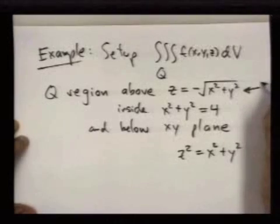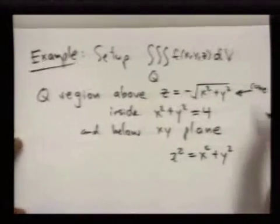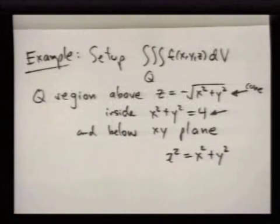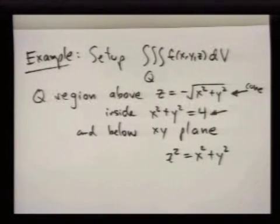So this here is a cone, and this here, as I already said, is a cylinder because the pair (x, y) has to be on the circle of radius 2, but z is allowed to be anything.